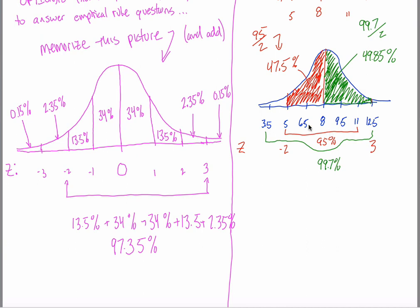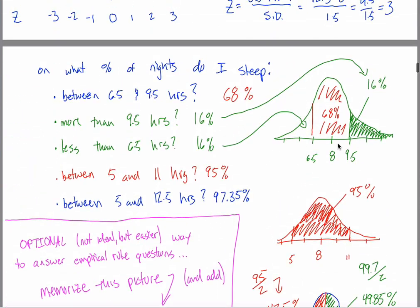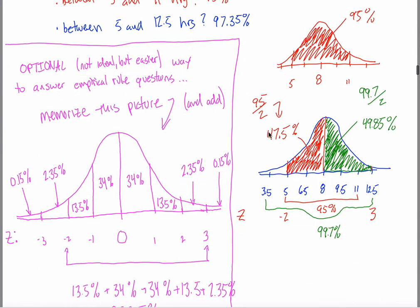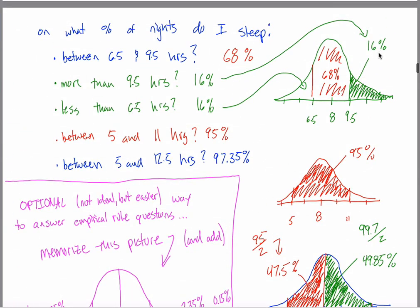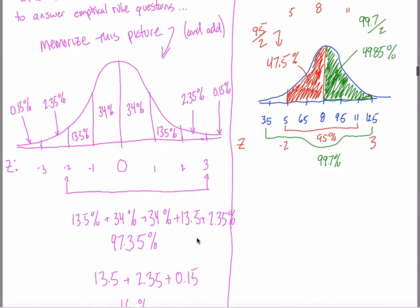Nothing special about this problem — you could do that for any of these problems. Remember that question: what percentage of nights do I sleep more than nine and a half hours? More than nine and a half hours would be this region, this region, and this region. Add up 13.5% and 2.35% and 0.15%, and what you'll get is 16%. That specific one might have been easier to do this way, but you don't have to deduce that if 68% is shaded in the middle, then 32% is on the outsides, so half of that 32% — 16% — is over here. You can just go adding up numbers.